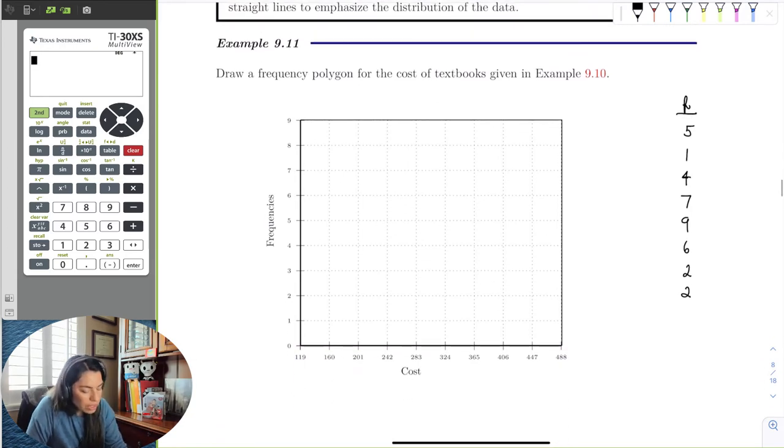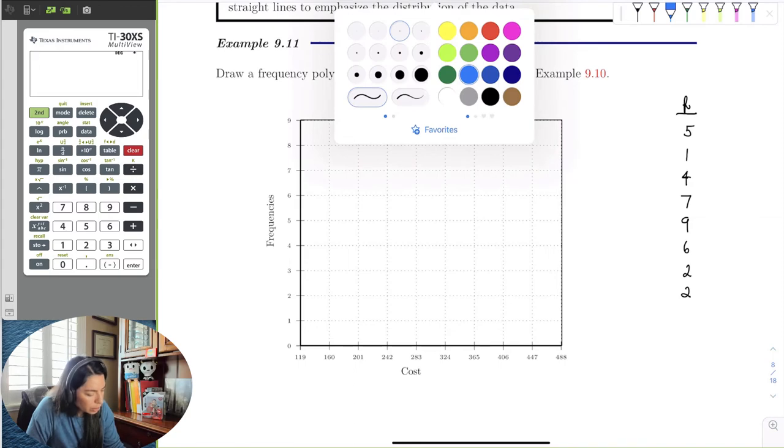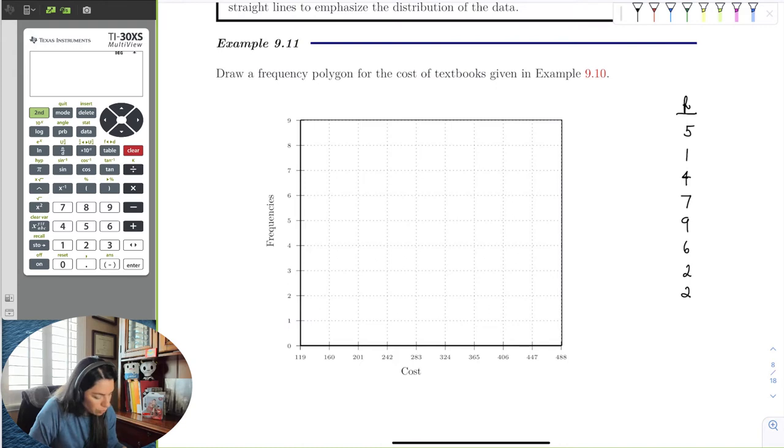Let's plot dots for each one. I'm going to do blue and change it to a little bit bigger. The first one was 160, and that's 5, and then 1, and I'm just going to plot them really quick. 2, 8, 3, 7, 9, 6, 2, and 2, like that.